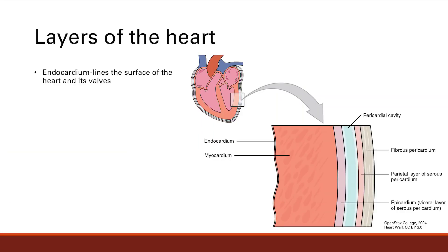Now we're going to look into the heart — we're going to look at the layers. So we're taking a cross-section here. This is the endocardium. The first layer is the endocardium. It's the layer of the heart — it lines the surface of the heart and its valves. You get endocardium, then myocardium, then pericardium.